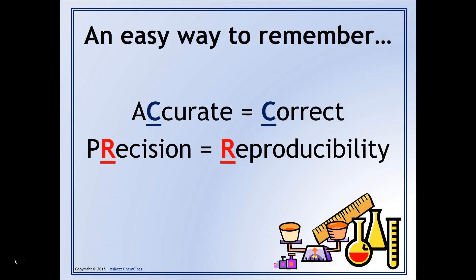A lot of students have trouble usually remembering this, so here's an easy way to remember. If something is accurate, think of the word accurate or the C in the word accurate as being correct. If something is precise or has precision, notice reproducibility is another word that starts with R. So use the R in precision to think about reproducibility. That will most likely help you remember.